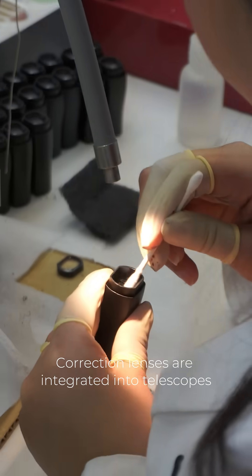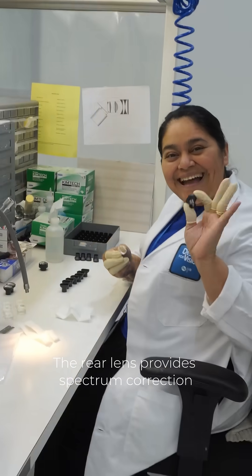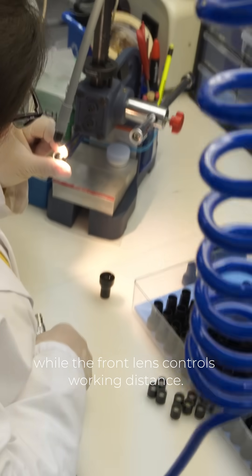Correction lenses are integrated into telescopes with exact accuracy. The rear lens provides spectrum correction, while the front lens controls the working distance.